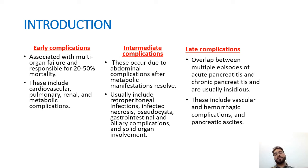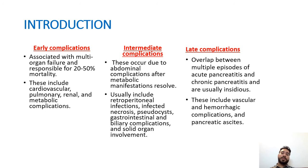Intermediate complications occur due to abdominal complications after metabolic manifestations have resolved. They usually include retroperitoneal infections, infected necrosis, pseudocysts, gastrointestinal and biliary complications, and solid organ involvement. Late complications overlap between multiple episodes of acute pancreatitis and chronic pancreatitis, and are usually insidious. These include vascular and hemorrhagic complications and pancreatic ascites.